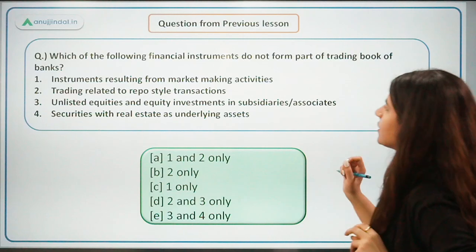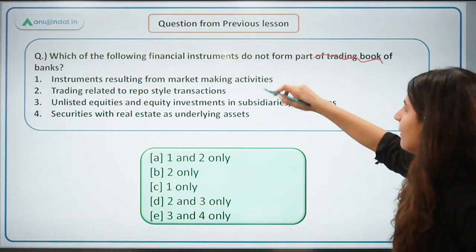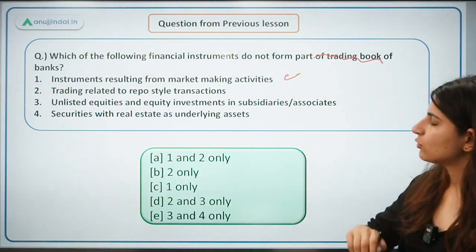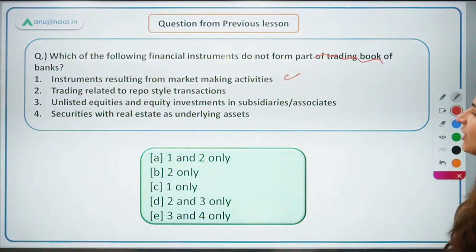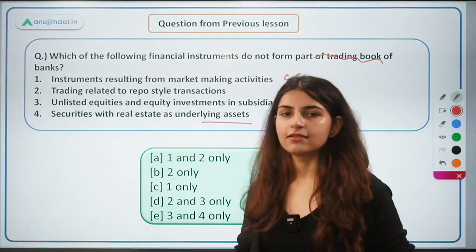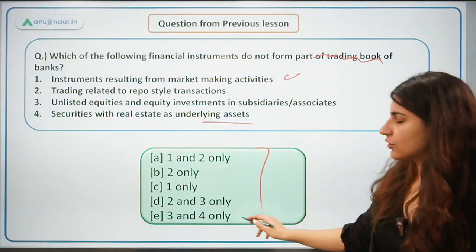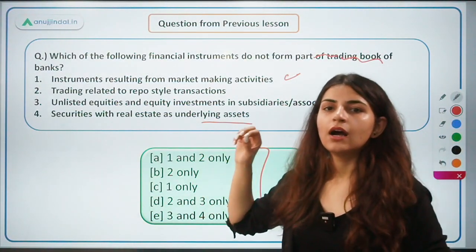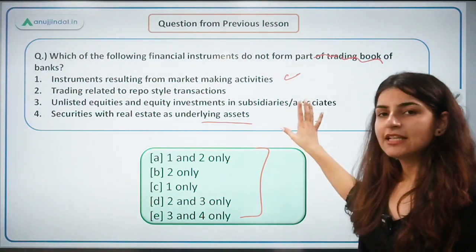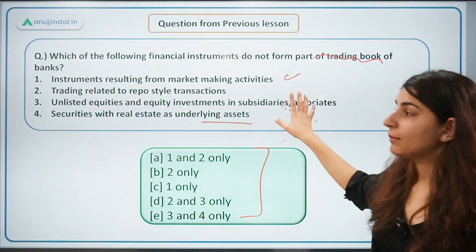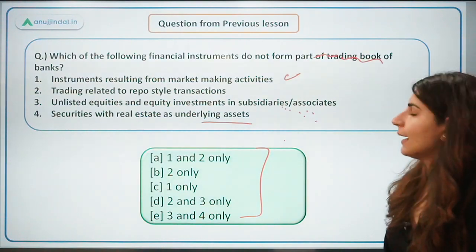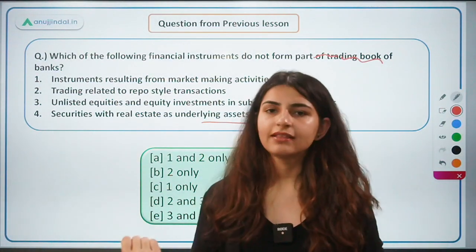Revision question from a previous video: Which of the following financial instruments do NOT form part of the trading book of banks? The options are: instruments resulting from market-making activities; trading related to repo-style transactions; unlisted equities and equity investment in subsidiaries or associates; securities with real estate as underlying assets. Answer this in the comment section. If you cannot, go back to the February video — I think it was Day 10 — which covered guidelines for minimum capital requirement for market risk, where trading book and banking book were explained.